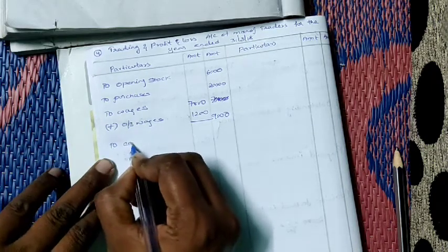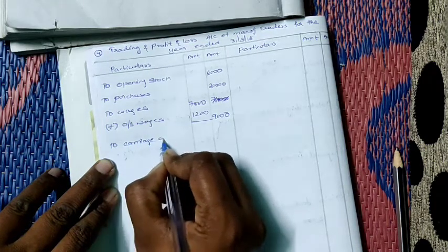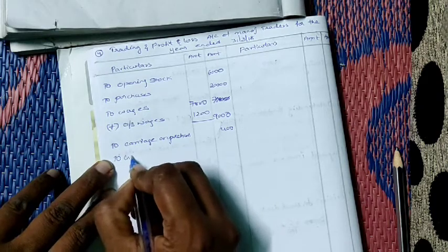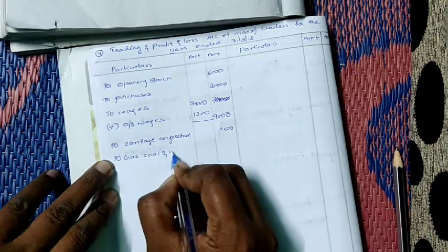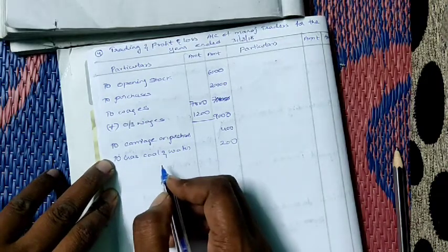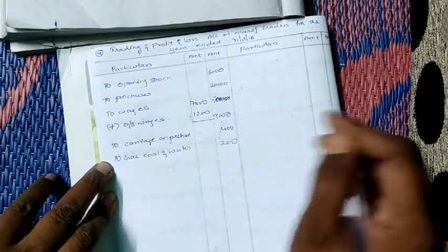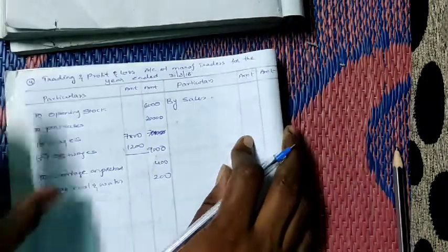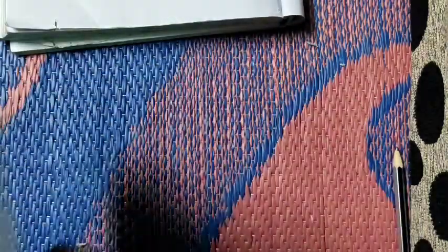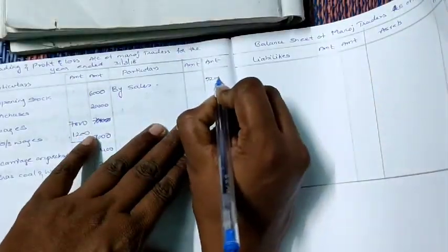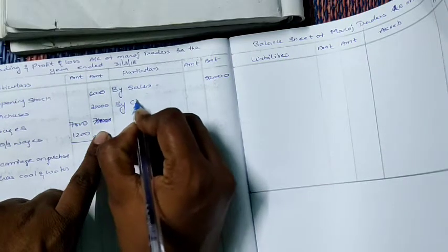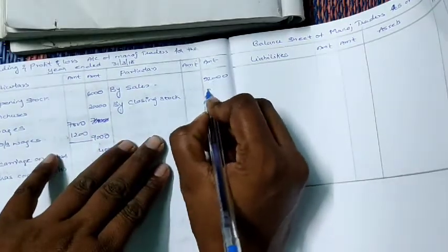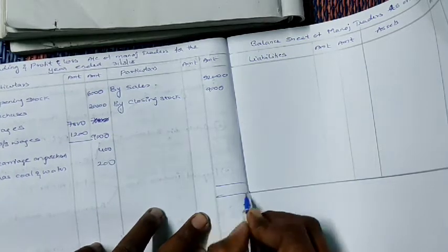After wages: carriage on purchases is 400. Gas, coal and water is 200. So we have taken all items in the trading account debit side. Credit side: sales — no returns — 52,000. Next, closing stock is 9,000. All items are now taken.